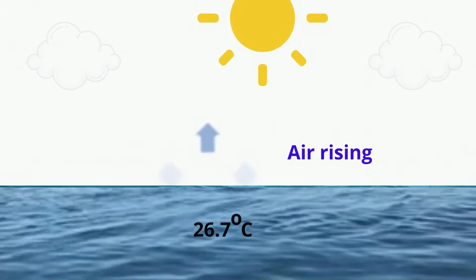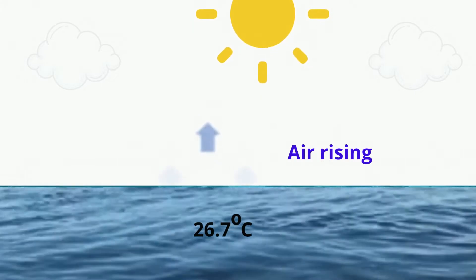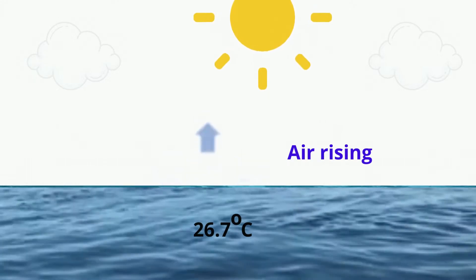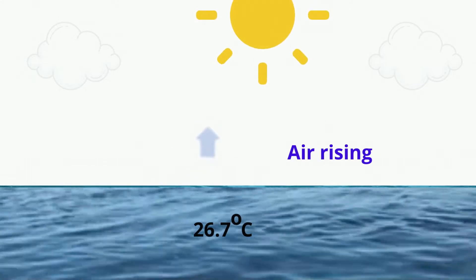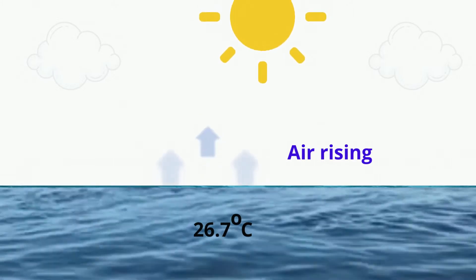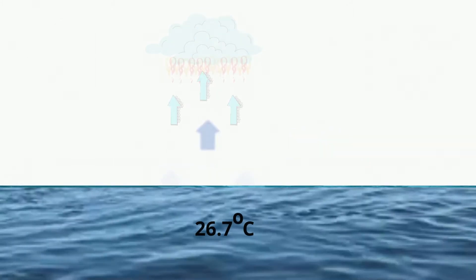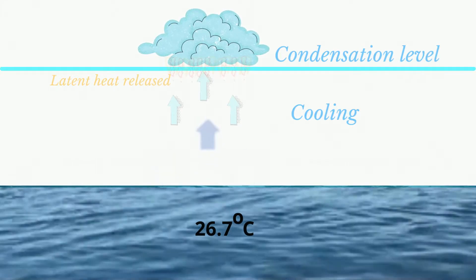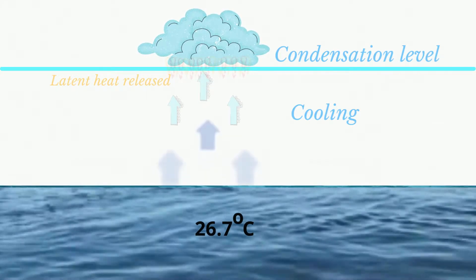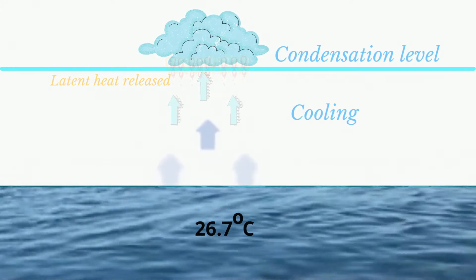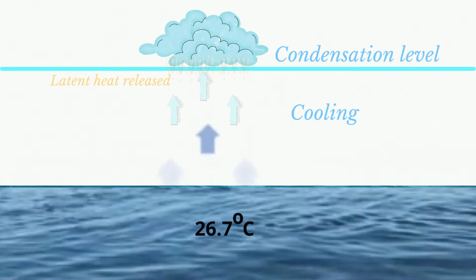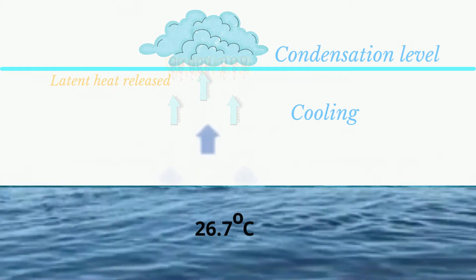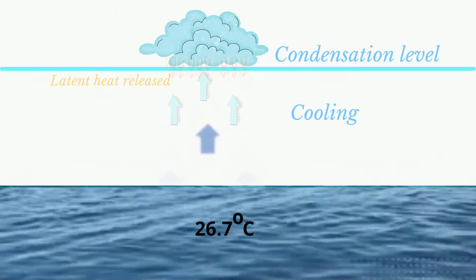The hot, moist air above the sea surface will then begin to rise to higher heights, since the warmer the air gets, the lighter it becomes. As the air rises, it will eventually cool to its dew point, where it holds all the moisture that it can hold at a particular temperature.